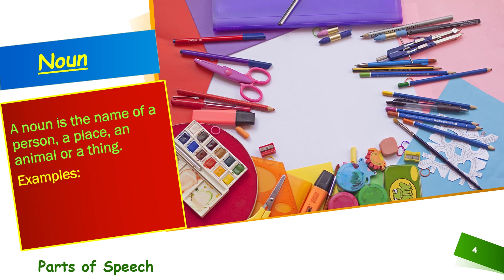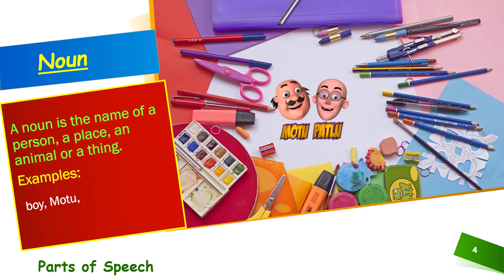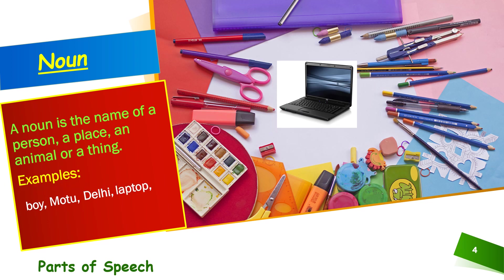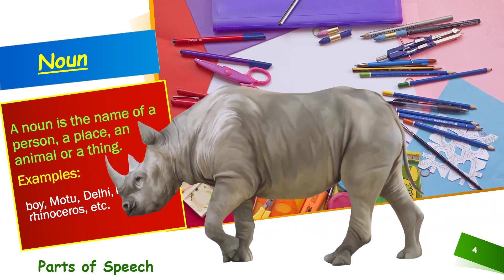Let us take a few more examples now. I can see Motu Patlu — you all like watching their cartoons. That means Motu is also a noun and Patlu is also a noun. That's India Gate — the name of a monument — that is also a noun. And where is India Gate? It is in Delhi — that's the name of a city — that is also a noun. This is a laptop, that is also a noun. This is a rhinoceros, this is also a noun. That means whatever you can see around you and the name that you call it with is a noun.